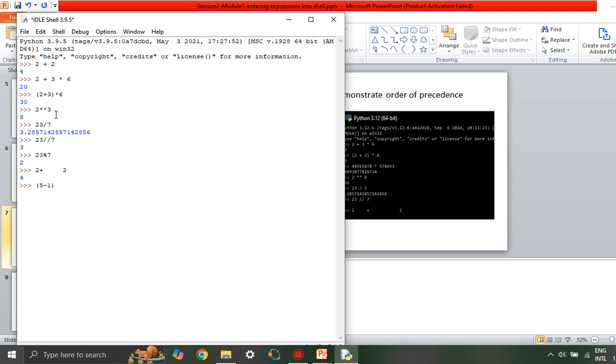Now what is the value of this? 5 minus 1, multiplication operator, 7 plus 1, divided by 3 minus 1. What is the value you get? 16. So you can try these different operations.